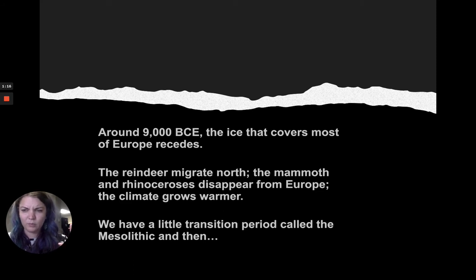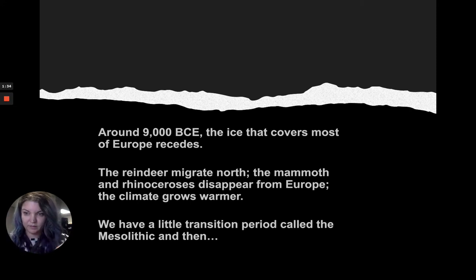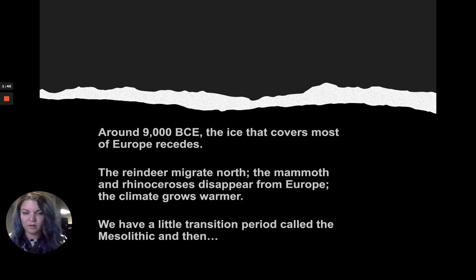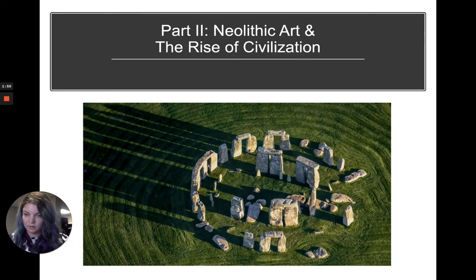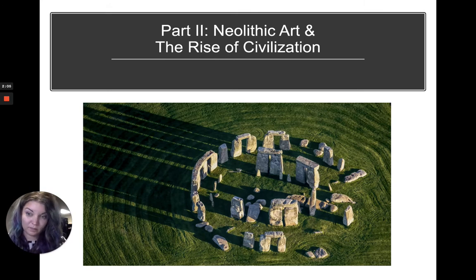This is for Art History 1. I assume most of the people who watch this are in my class, though occasionally I get comments from people on the internet, which is also fine. So around 9000 BC, the ice that covers most of Europe recedes, the reindeer migrate north, the mammoth and rhinoceroses disappear from Europe, the climate starts to warm up, and we have a little transition period called the Mesolithic. Then we have part two of our lecture: Neolithic art and the rise of civilization. Neolithic literally means 'new stone' — it's part of the Stone Age.